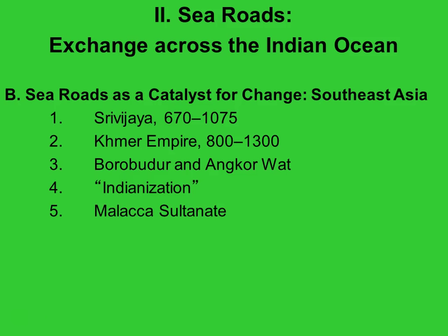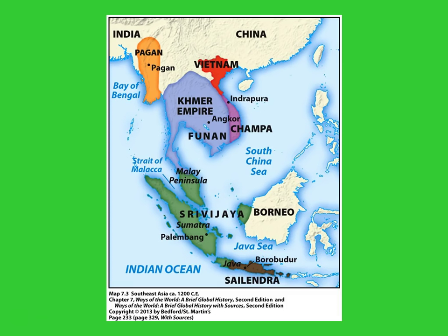Toward the end of the post-classical era, Islam had spread into Southeast Asia and an Islamic state was created at the Straits of Malacca, growing prosperous for the same reasons Srivijaya did earlier. In this map you can see the Kingdom of Srivijaya at the Straits of Malacca, the Khmer Empire with Angkor Wat, Borobudur on the island of Java, Vietnam as a tributary state of China, and the Champa Kingdom, where Champa rice originates — which of course led to dramatic population increases in China.